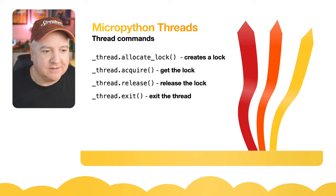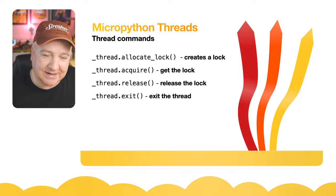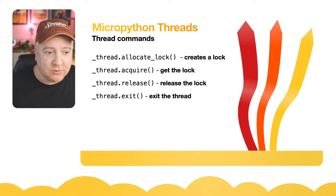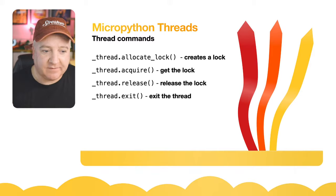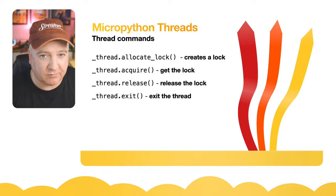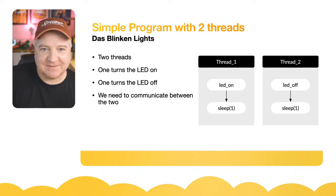In MicroPython threads there are only four commands you need: `allocate_lock` to create a lock, `acquire` to get the lock, `release` to release it, and `exit` to exit a thread. It's very simple - technically not fully documented yet; the MicroPython docs say it's highly experimental, but it works very reliably. Threads automatically exit once their function completes, but if you have a `while True` loop and want to terminate the thread early, you can use `thread.exit()`.